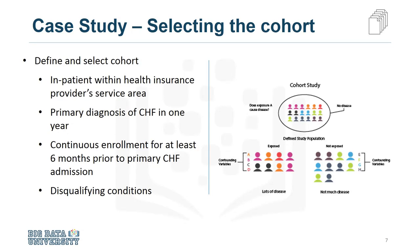Second, they focused on patients with a primary diagnosis of congestive heart failure during one full year. Third, a patient must have had continuous enrollment for at least six months prior to the primary admission for congestive heart failure, so that a complete medical history could be compiled. Congestive heart failure patients who had also been diagnosed with other significant medical conditions were excluded from the cohort, because those conditions would cause higher than average readmission rates and thus could skew the results.